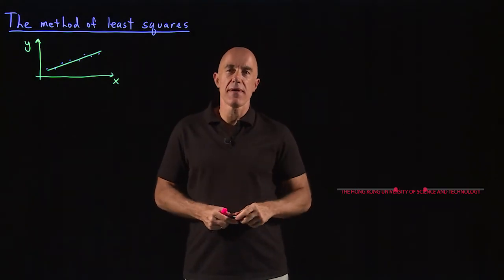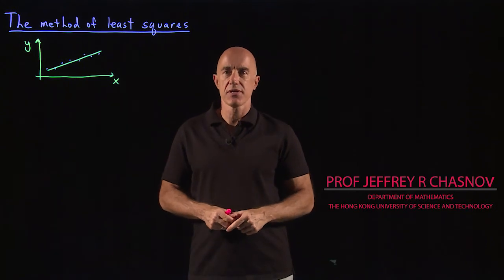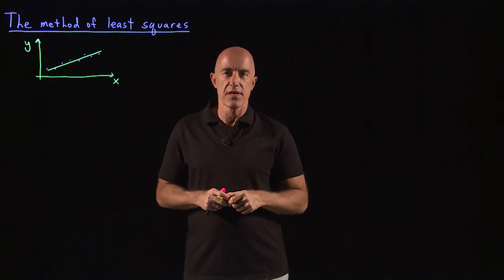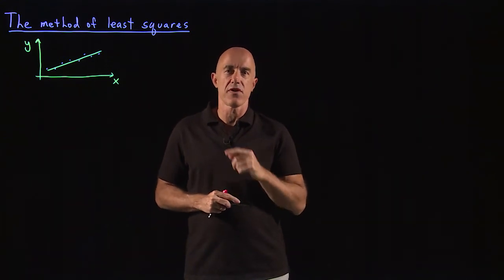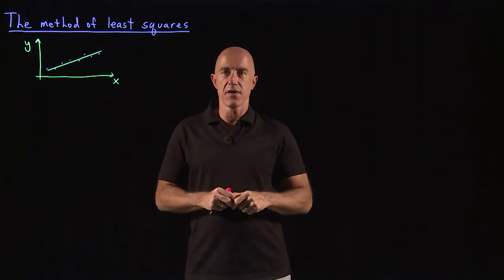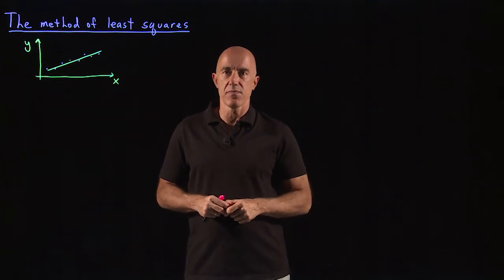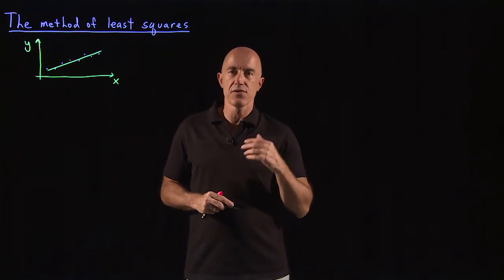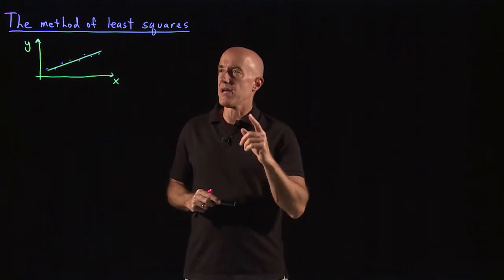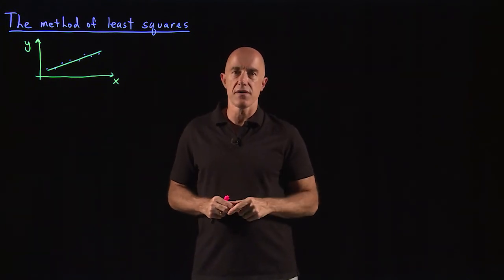We just learned about partial derivatives of a function of several variables. One of the main applications of derivatives in single-variable calculus is to find maximum and minimum of functions. It also works for functions of several variables, and I want to illustrate that by example. The example I'll give is a classic one called the method of least squares.